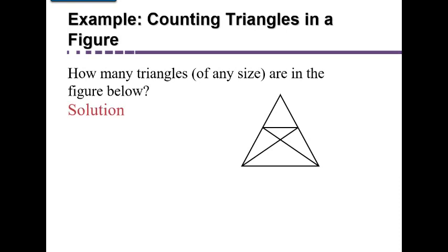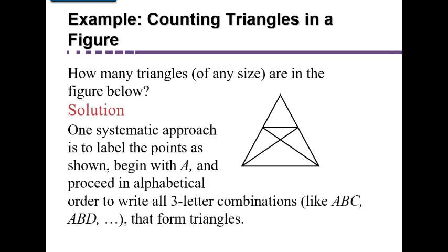The method we're going to use is to label the points at the tips of the corners of the triangles beginning with A, proceeding in alphabetical order, and write all three-letter combinations like A, B, C or A, B, D that form triangles. So I'm going to label the corners A, B, C, D, E, and F. We need three corners for a triangle.